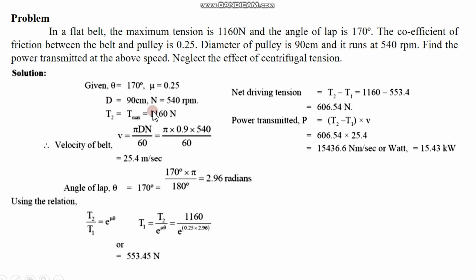Now we have T2. Then we find T1. Mu is given. Diameter is given, so we find the radius. The velocity formula is π·D·N divided by 60 — that gives the velocity of the belt from the diameter of the pulley and speed. The angle of lap is converted from degrees to radians. Then we apply T2 by T1 equal to e to the power μ·θ to find T1.